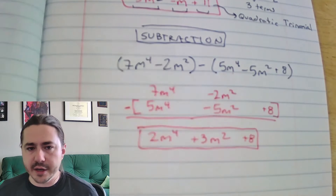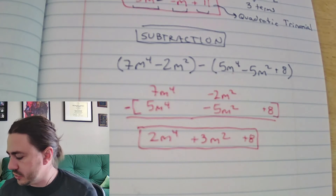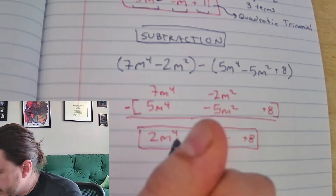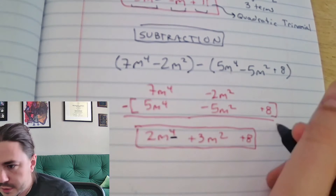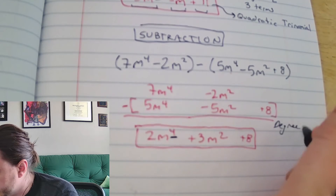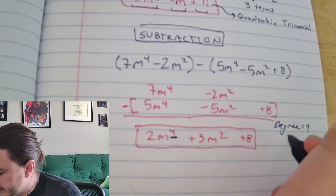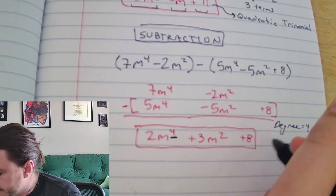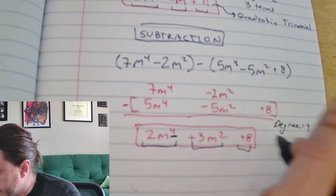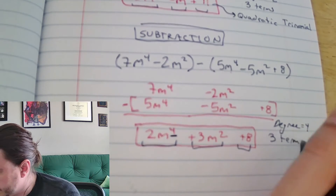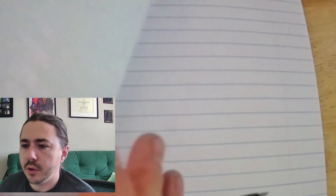Let's go ahead and name it. The largest degree is 4, so it's degree 4. And the number of terms is 3 — we've got 1, 2, 3.